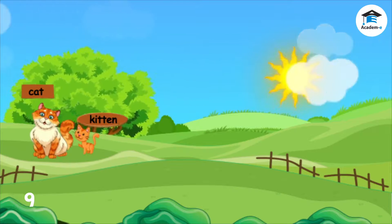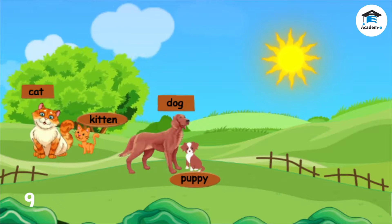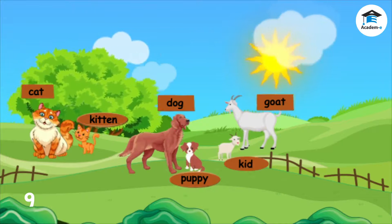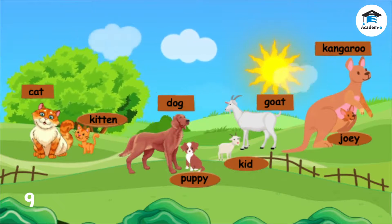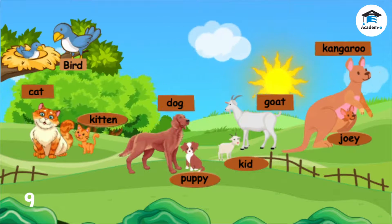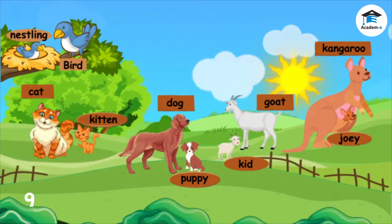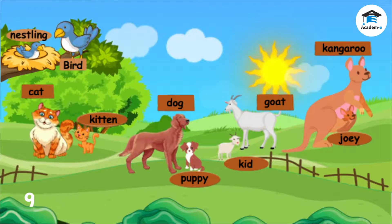The young of a cat is called a kitten. The young of a dog is called a puppy. The young of a goat is called a kid. The young of a kangaroo is called a joey. The young of a bird is a nestling. How are these young animals the same as their parents? How are they different from other animals?